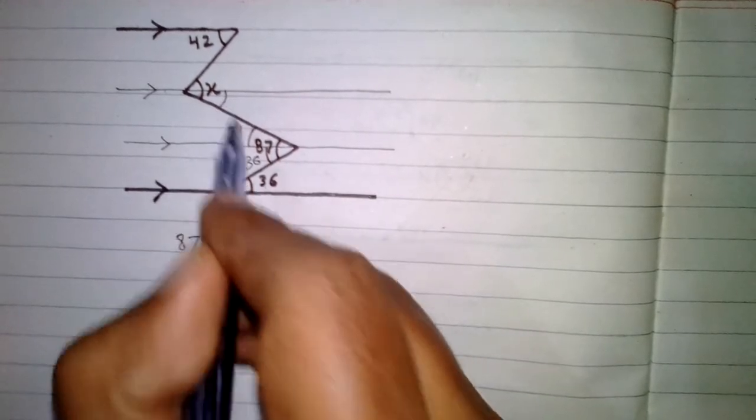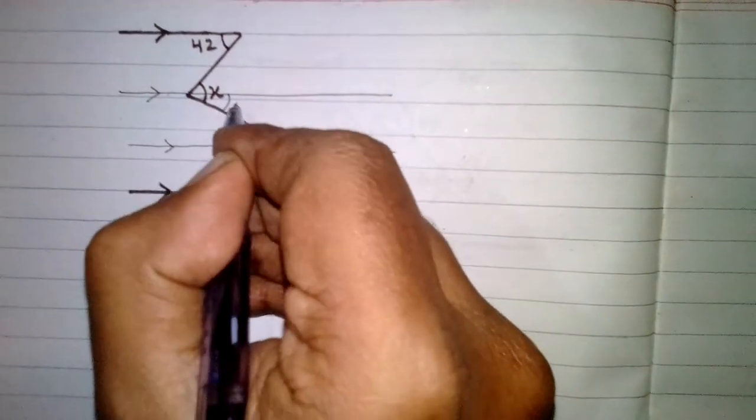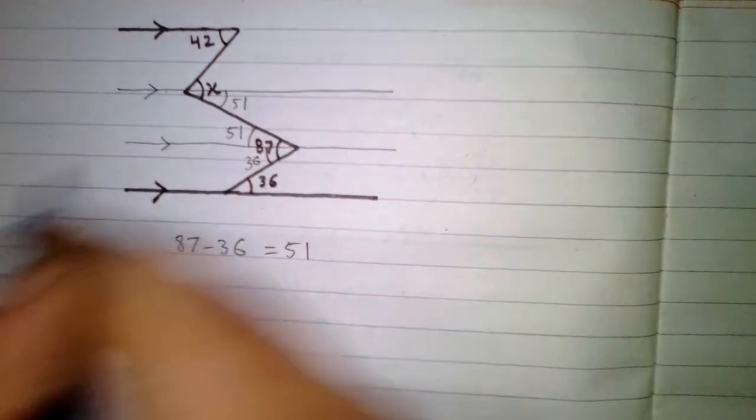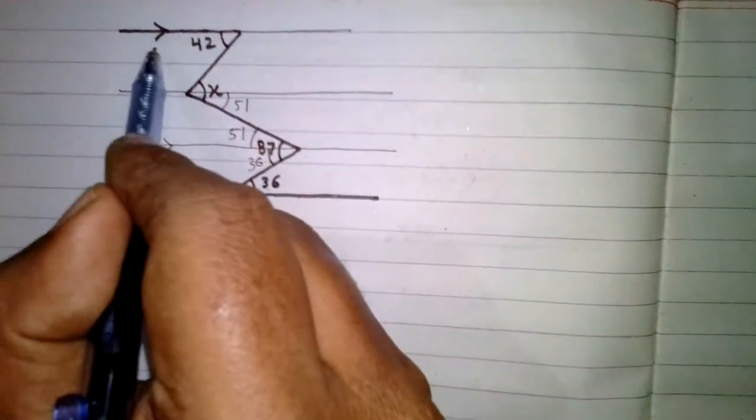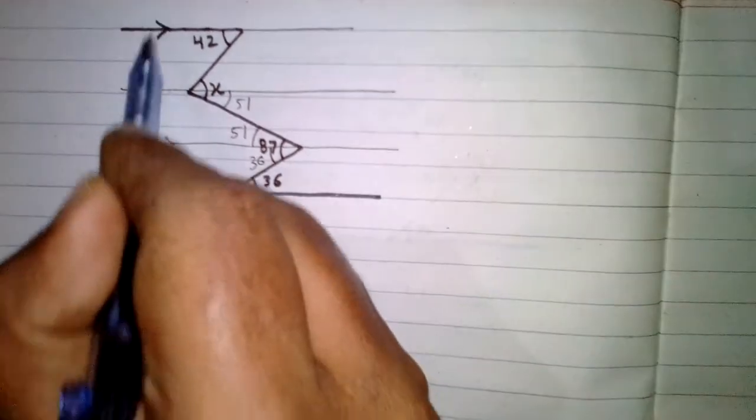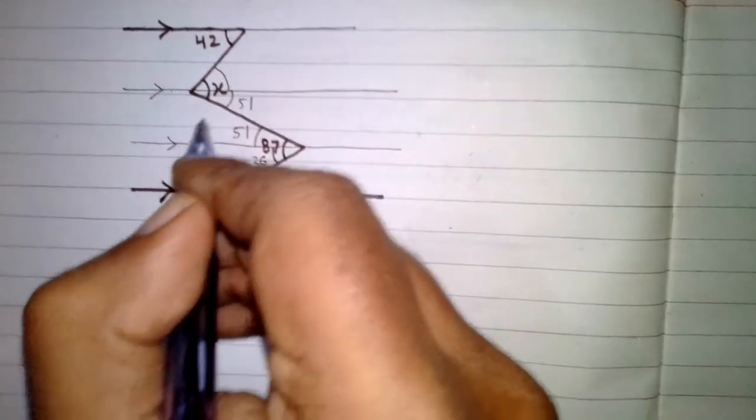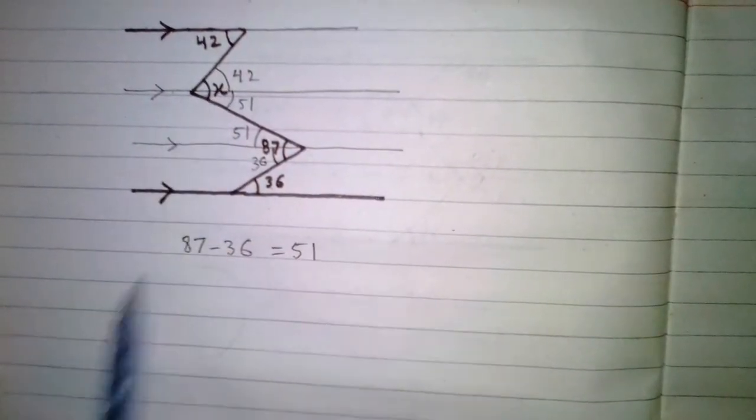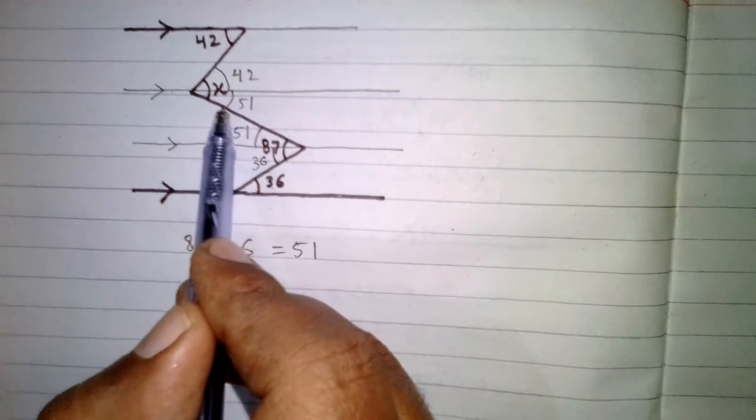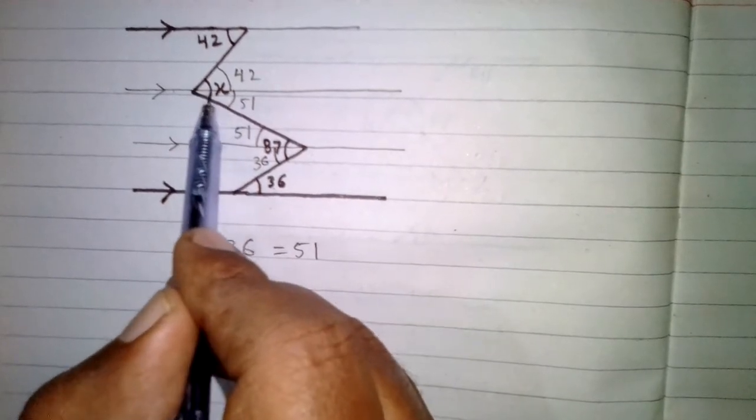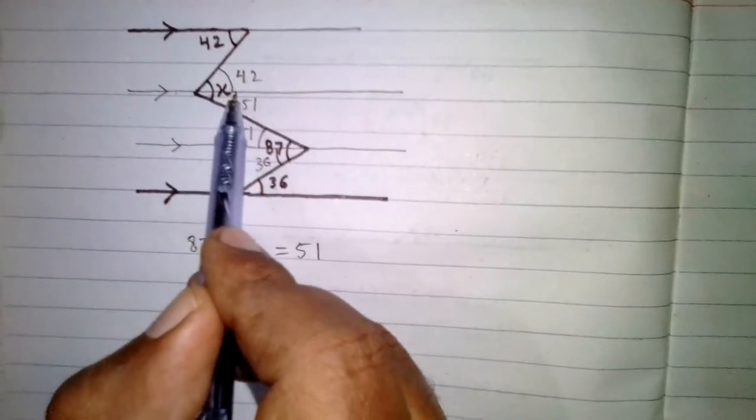So this angle and this angle are alternate angles and they are equal, so this angle is 51. This angle is 42 and this angle is 51, so this whole angle is the sum of 42 and 51.